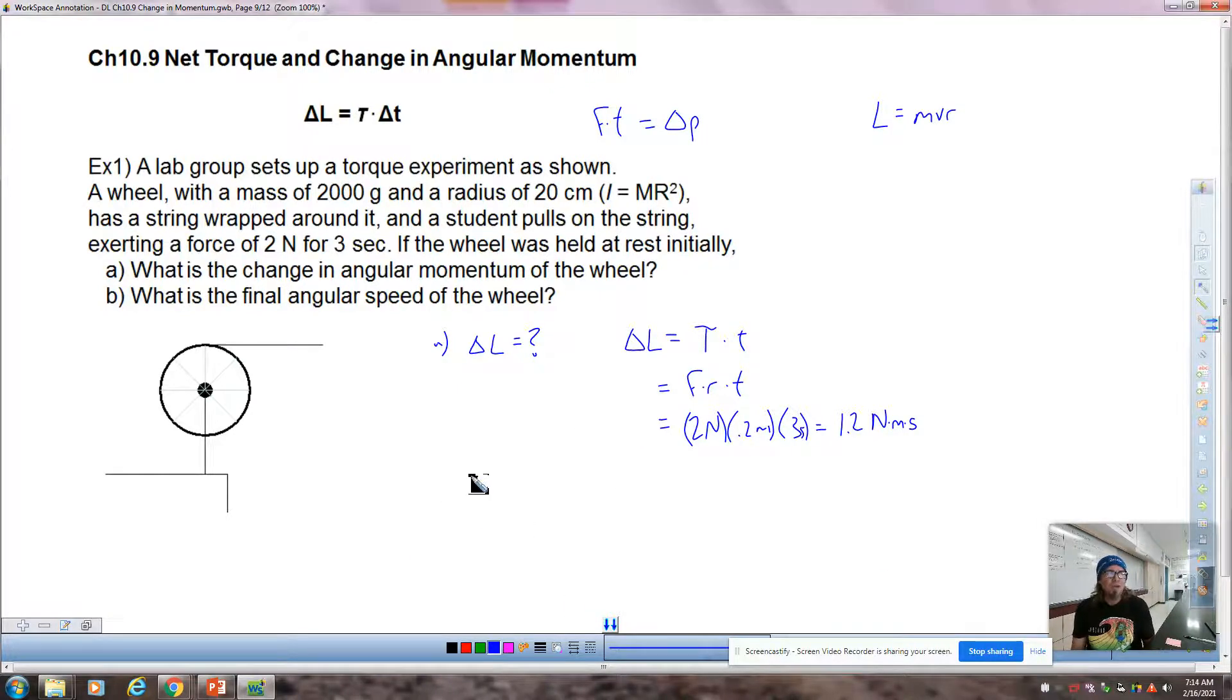So part B says, what is the final angular speed of the wheel? So back up here, back in chapter 7 through 9, we said mv final minus mv initial. So for delta L, we should be able to say mvr final minus mvr initial, which is interesting because if we say it that way, which part is the final and the initial? So it could be the radius, right? We could extend. We did this on the last notes. Change the radius of distribution of mass by the radius.